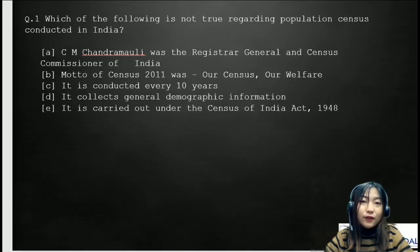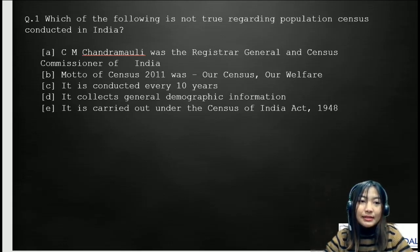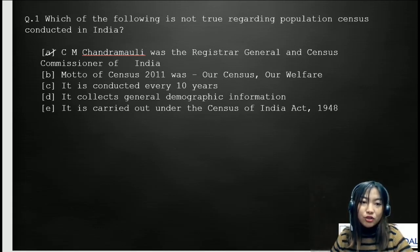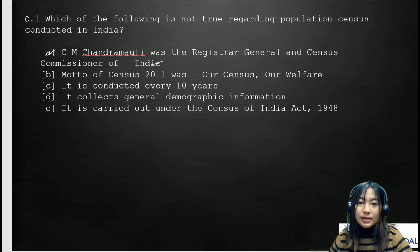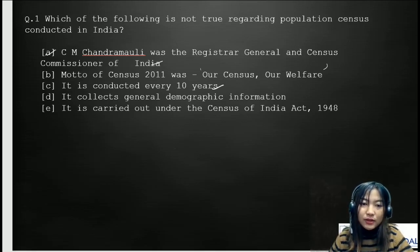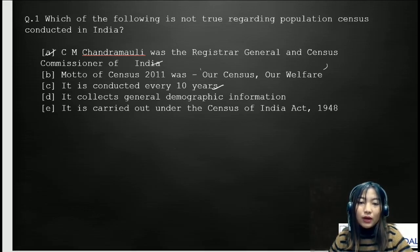Moving on to the first question: which of the following is not true regarding population census conducted in India? Option A: C.M. Chandra Mollie was the Registrar General and Census Commissioner of India. Option B: the motto of census 2011 was 'our census our welfare'. Option C: it is conducted every 10 years. Option D: it collects general demographic information. Option E: it is carried out under the Census of India Act 1948.